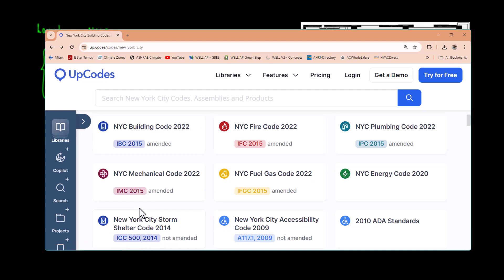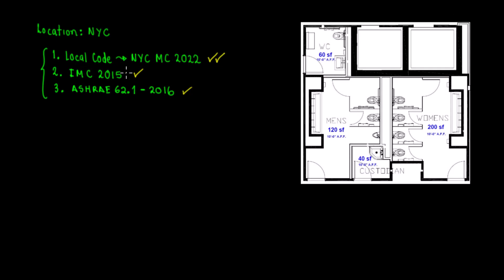Now we know our codes. Let's go back to the calculation — we're going to start with New York City Mechanical Code 2022. In these drawings you can see the men's restroom, the women's restroom, the janitor's closet, an independent restroom, and the custodian room. The custodian has their own room with a mop sink. These are the public restrooms. Let's start with the calculation for the WC.